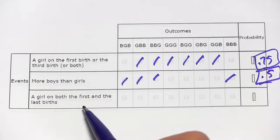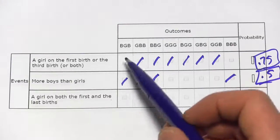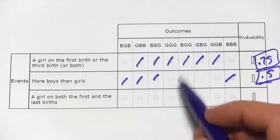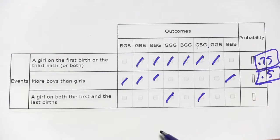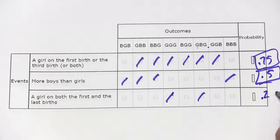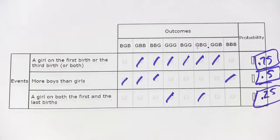And finally, we have a girl on both the first and the last. [Finding matching outcomes.] That's only two out of eight, or one fourth, and that's a probability of 0.25.